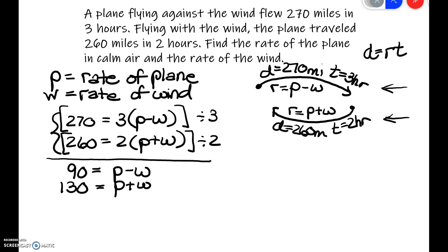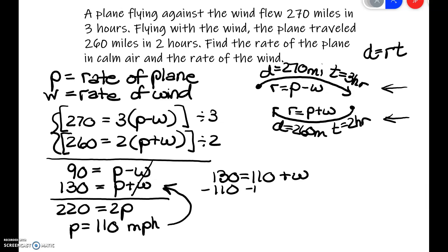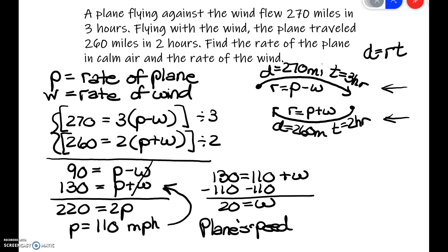This makes it really nice — I can add these two equations and the W's are eliminated. Adding gives 220 equals 2P. Dividing by 2, P equals 110 miles per hour. Plugging that back into the bottom equation: 130 equals 110 plus W. Subtracting 110 from both sides gives W equals 20. So the plane's speed equals 110 miles per hour.